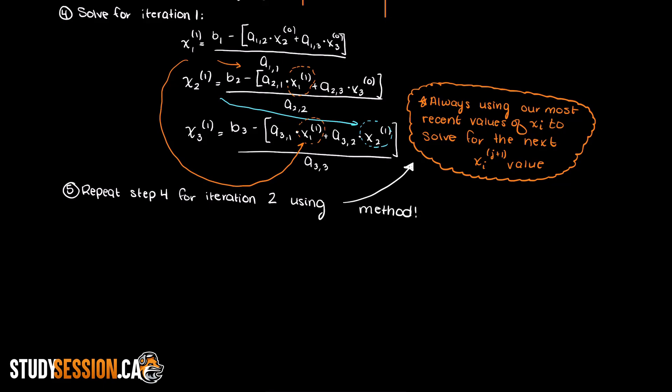Step 5: Now that all of the x values for iteration 1 have been found, we can move forward to iteration 2 and solve for x1 using the x2 and x3 values found in iteration 1.